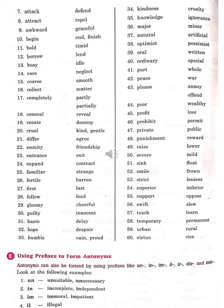Collect (Ikatha Kerna) – Scatter (Bikherna). Completely (Poori Tarah) – Partly (Aanshik Roop Se). Conceal (Chupana) – Reveal (Ujagar Kerna). Create (Banana) – Destroy (Barbaad Kerna, Khatam Kerna).